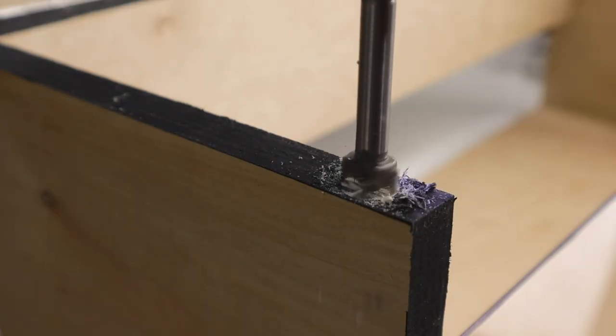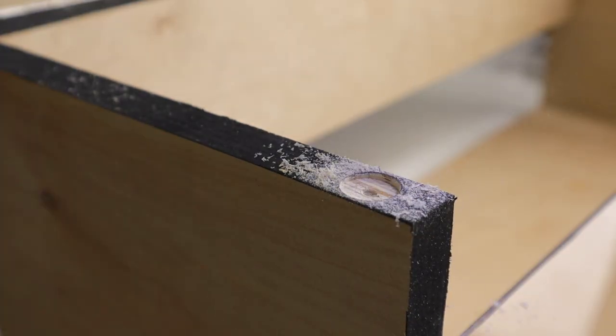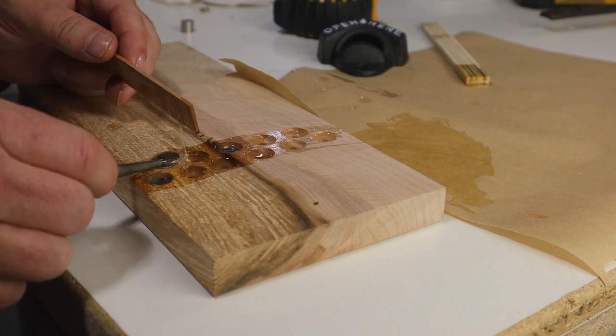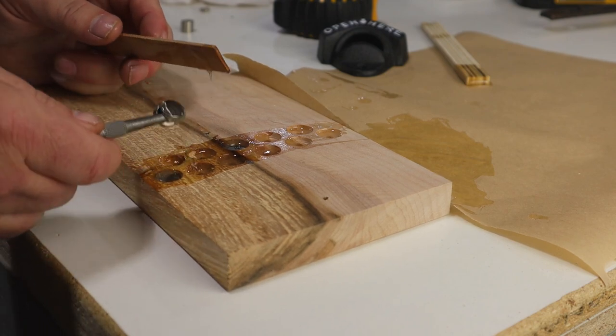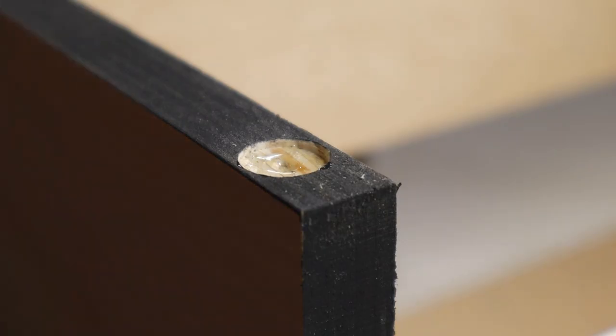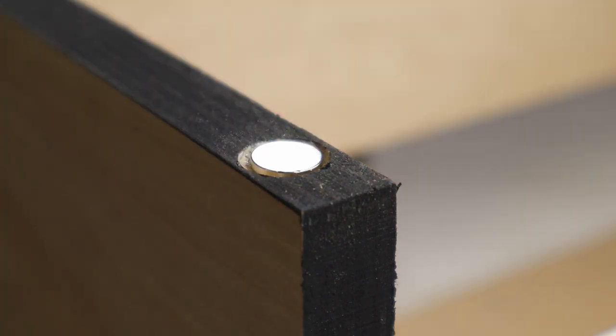I'm also going to add some magnets to help hold the lid in place. The last time I used these magnets I made a bit of a mess with the epoxy. This time I'm just going to use some CA glue to hold them in place, and that was much easier than the epoxy.